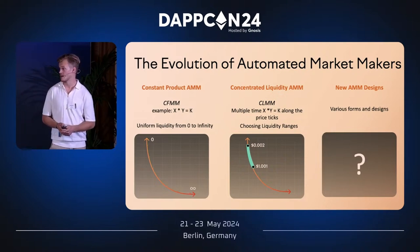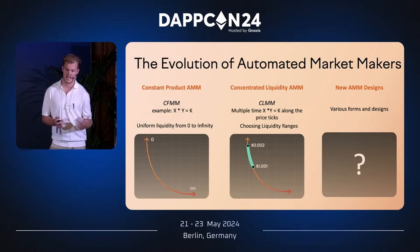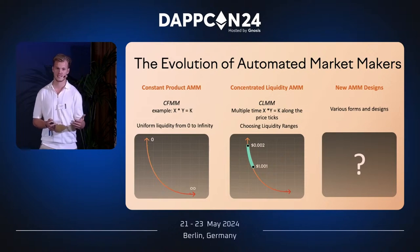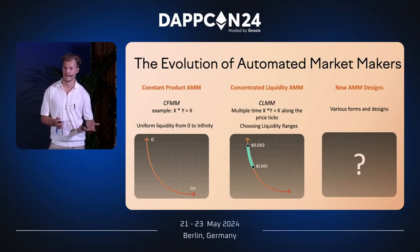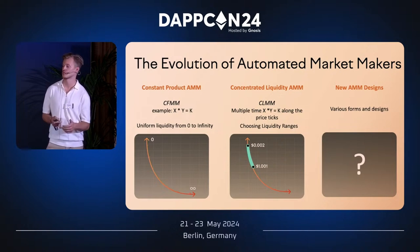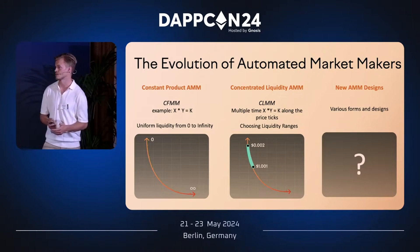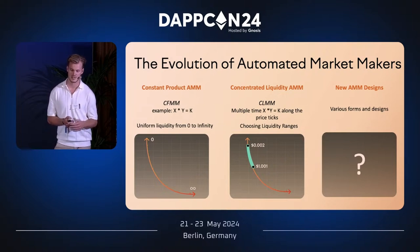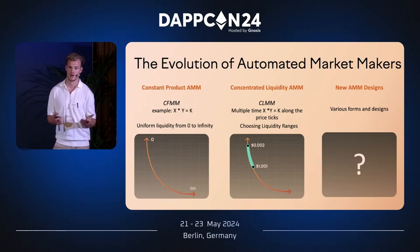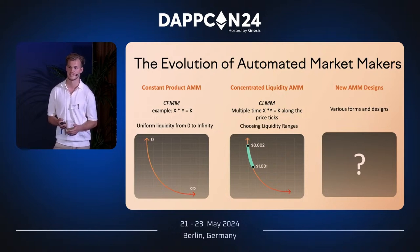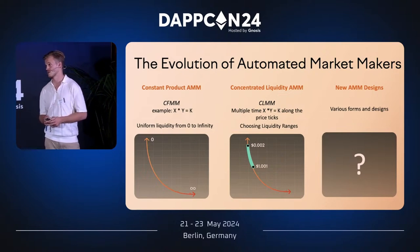The AMM has evolved through different mathematical designs. It started with the constant function AMM where x times y equals k — x is the amount of one asset, y is the amount of the other, always equal to k. This was the basis of early Uniswap developments like v1 and v2, where you provide liquidity from zero to infinity — a uniform liquidity distribution. But providing liquidity across that entire range is inefficient because you're providing it in price ranges where no trading activity happens.